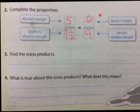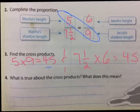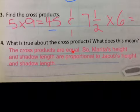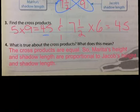Let's find the cross products. Now the cross product is six times seven and a half and five times nine. So my first cross product is five times nine, there it is, equals 45. And seven and a half times six equals 45 as well. Because we know that six times seven is 42 and then what's a half of six? It's three. So 42 plus three is 45. And you can see that the cross products are equivalent, so it is proportional. What is true about the cross product? What does this mean? Well, as we were just saying, the cross products are equal. They're both 45, right? So Marita's height and shadow length are proportional to Jacob's height and shadow length. And because they both got 45 and 45, so they are proportional. Now go ahead, pause the video and copy that down.